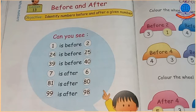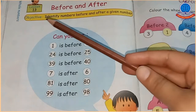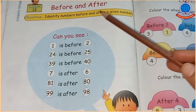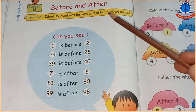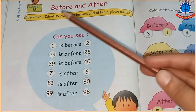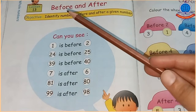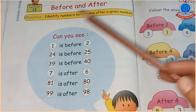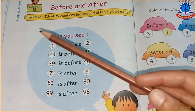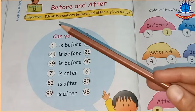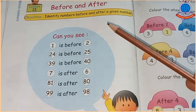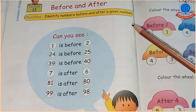Book page number 54, Lesson 13: Before and After. Before یعنی پہلے, After یعنی بعد میں. Objective: Identify numbers before and after a given number.